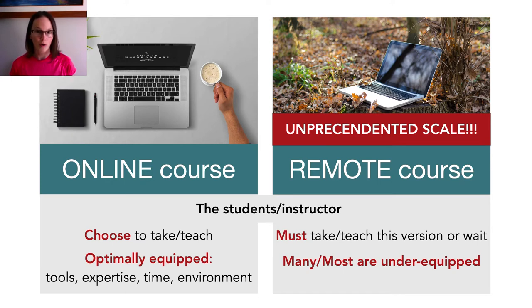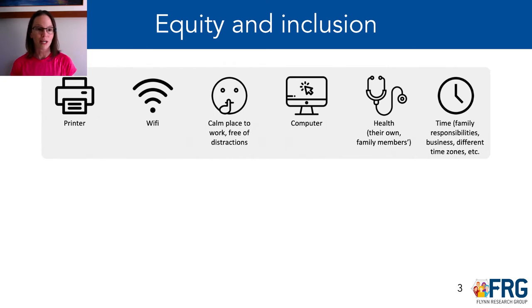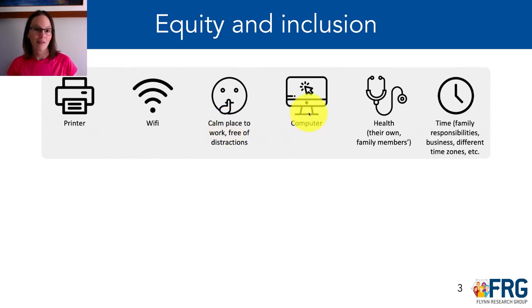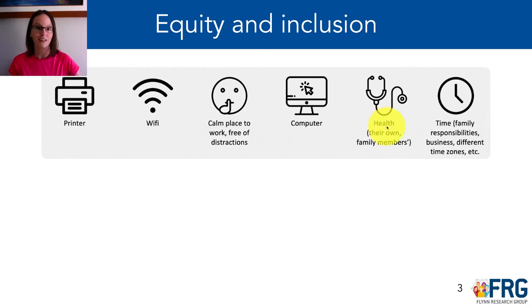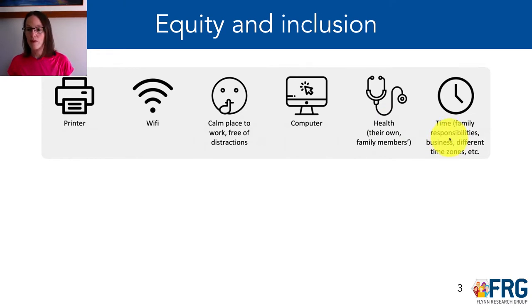As we make this change to a remote course, we're going to take equity and inclusion into account. From past courses and from a survey available on Brightspace, I know that many people in the class may not have a printer, or working or consistent Wi-Fi. Many people don't have a calm place to work free of distractions — and that's the case for me too. Some people may not have a computer or other tools they need, or may be dealing with their own health or family members' health, whether directly caused by COVID-19 or indirectly. People can also be stretched in terms of time with family responsibilities, working for the family business, or working in different time zones.